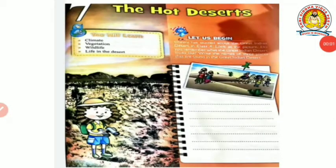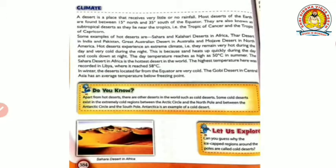Hello everyone, welcome to today's social science class. Today we will be studying Chapter 7 - The Hot Deserts. In this chapter we are going to learn about the climatic conditions of the desert, vegetation, wildlife, and how people live in deserts. So let's begin with climate.